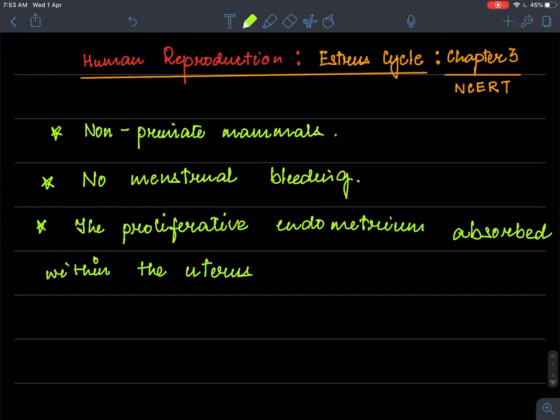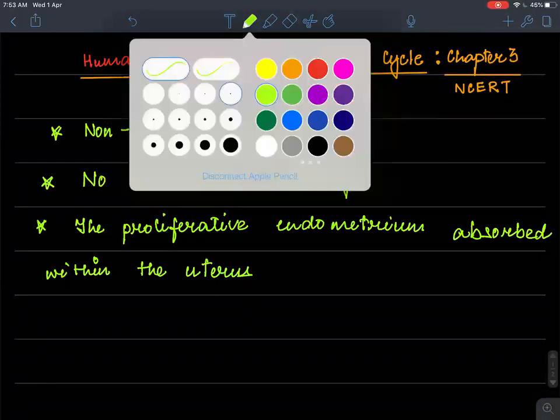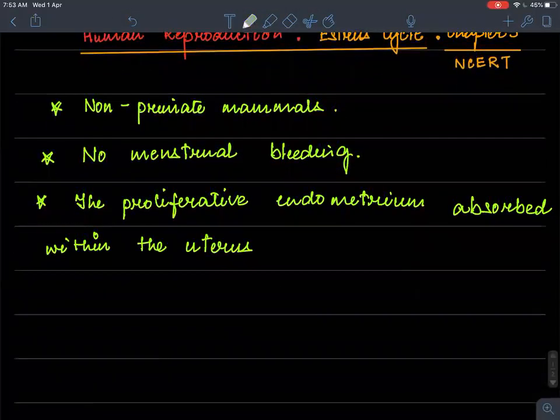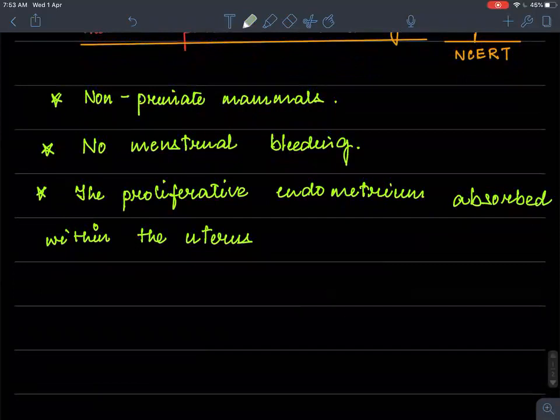Now estrus cycle is an extra topic which is studied under human reproduction because from here sometimes one question can be expected. Like in some years we have seen, so we do not leave this topic and we read this as an extra. Now, so this occurs only in case of all the mammals except the primate mammals.